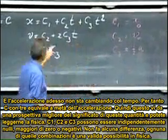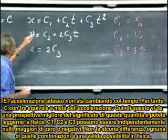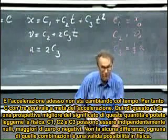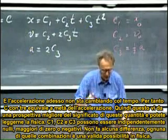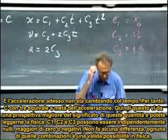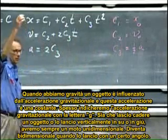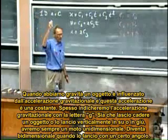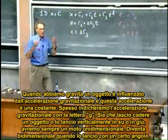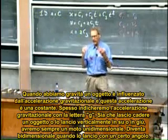So this gives you some insight into the meaning of these quantities, and you can read some physics in there. C1, C2, and C3 can independently be either zero, larger than zero, or negative — makes no difference. Each one of these combinations is a valid possibility in physics.